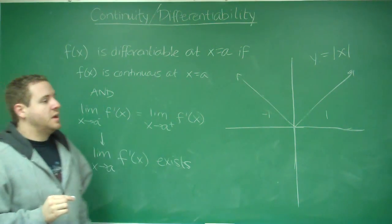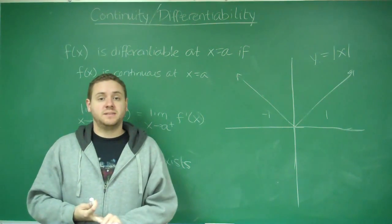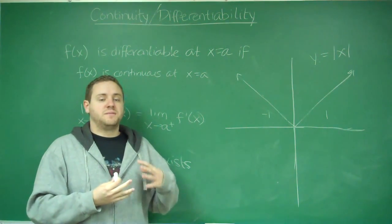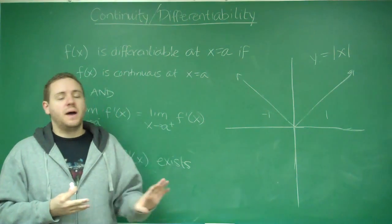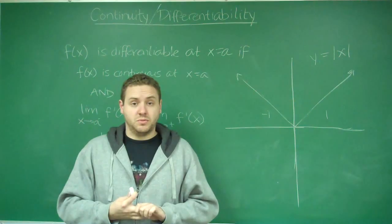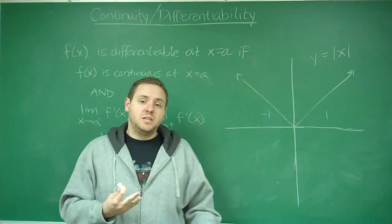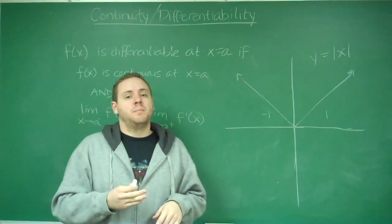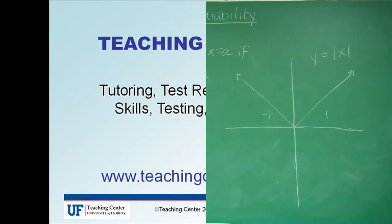So differentiable is a more specific case of continuity, essentially. So, again, if something's not continuous, you can automatically throw out that it's not differentiable. But if something's continuous, it then may or may not be differentiable if this next condition is satisfied.